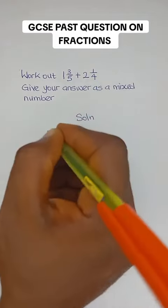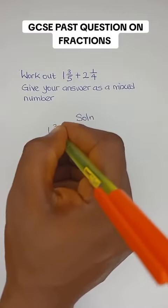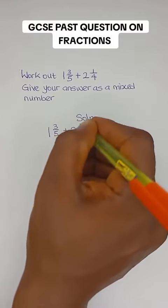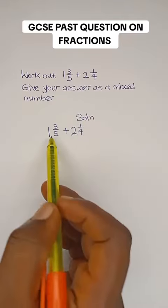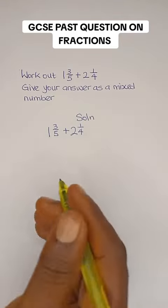Solution. We have 1 3/5 plus 2 1/4. The first thing we need to do is convert these mixed numbers to improper fractions, so let's do that.